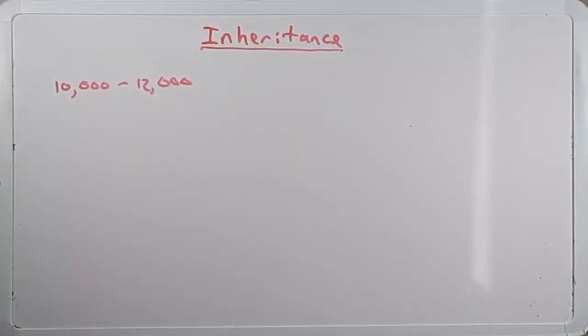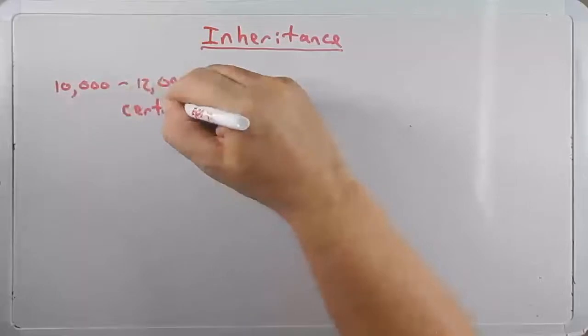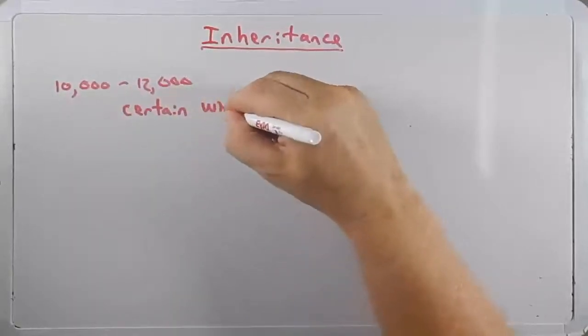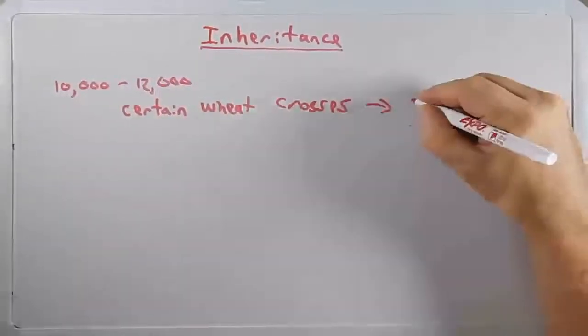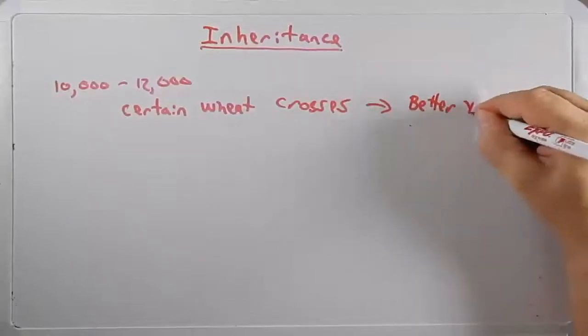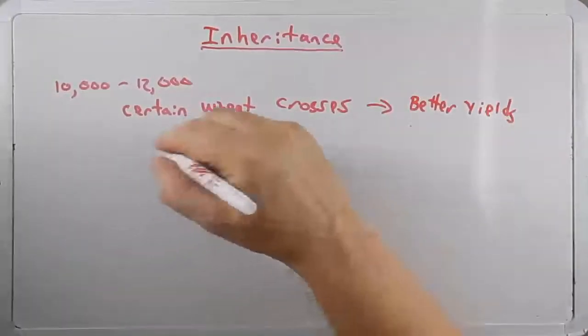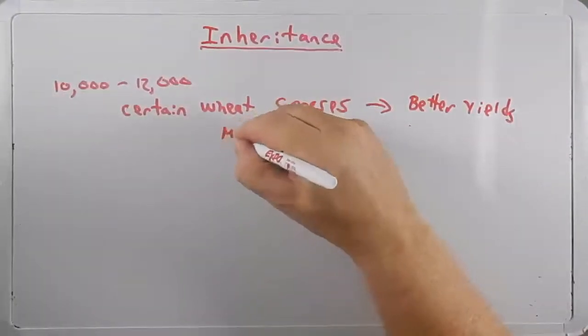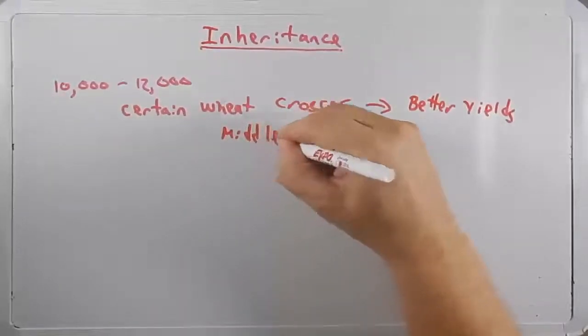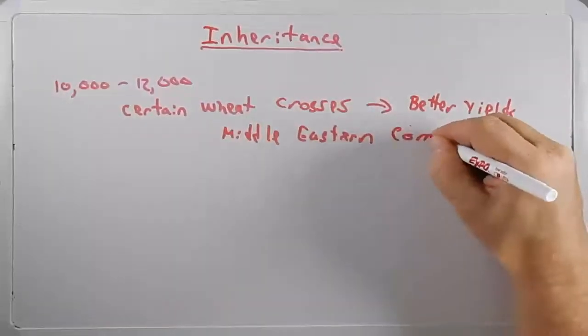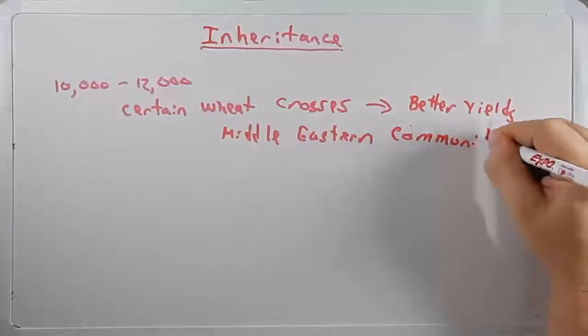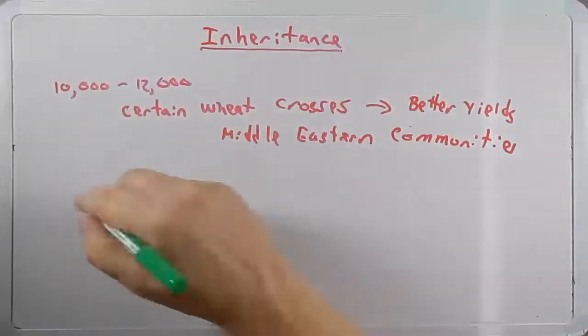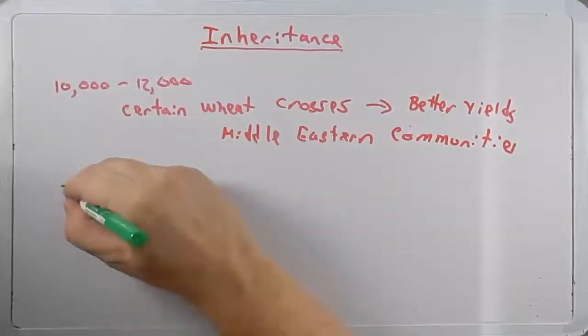Now, they didn't know they were studying inheritance, perhaps, but they certainly knew by crossing, for instance, certain wheat plants, that they would get better yields. And we know this from studies of Middle Eastern communities.